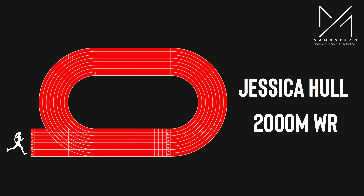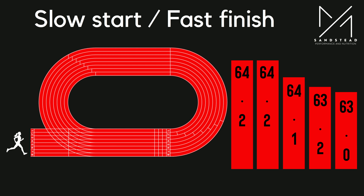Let's look at a race run just before the Olympics — Jessica Hall now has the women's 2,000 meter world record. Here's her pacing strategy to get that record. The idea of negative splits: slow start, fast finish. Her lap splits were: first lap 64.2, second 64.2, third 64.1, fourth 64.2, and the last lap 63.0. Now why is this?